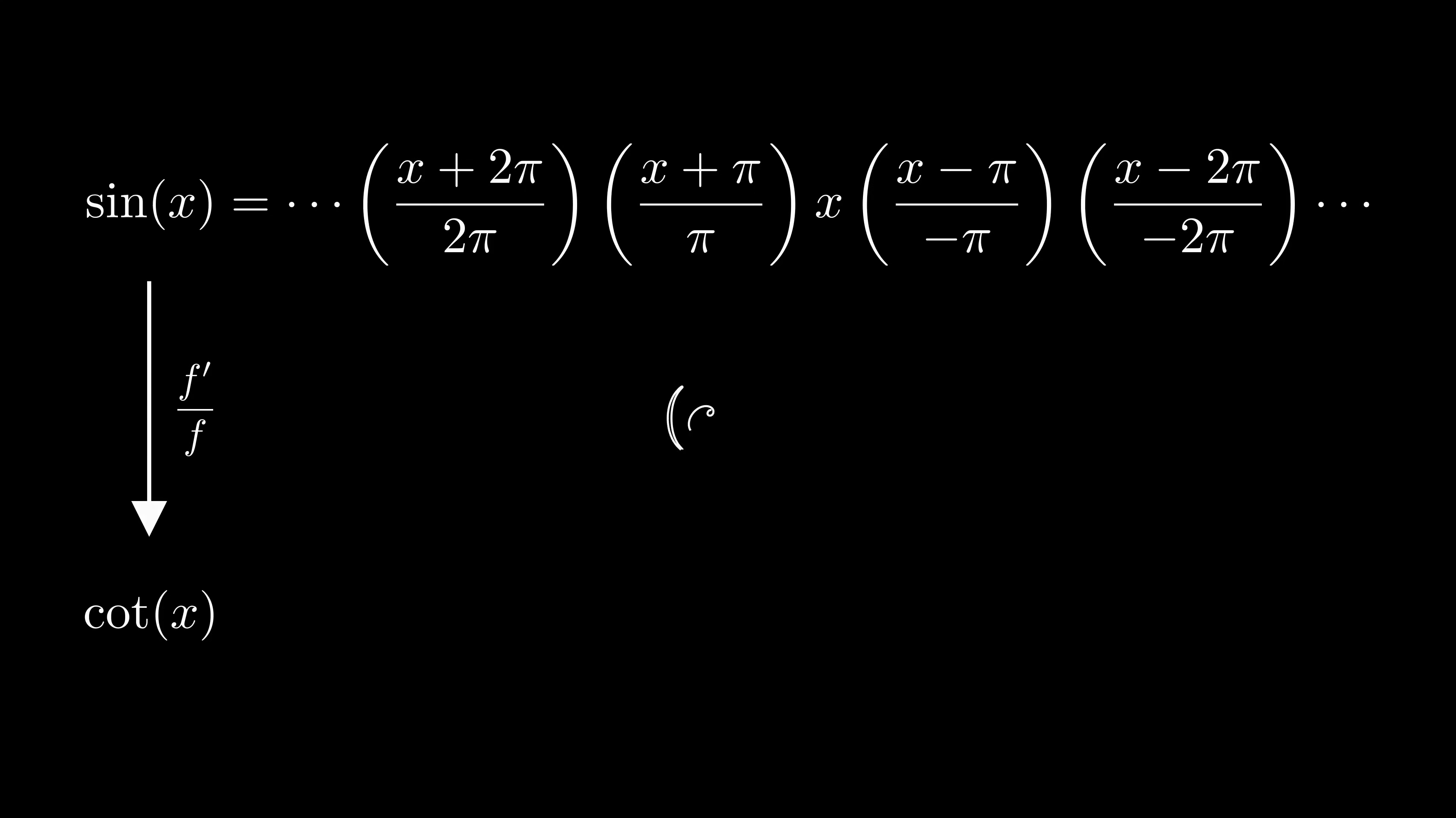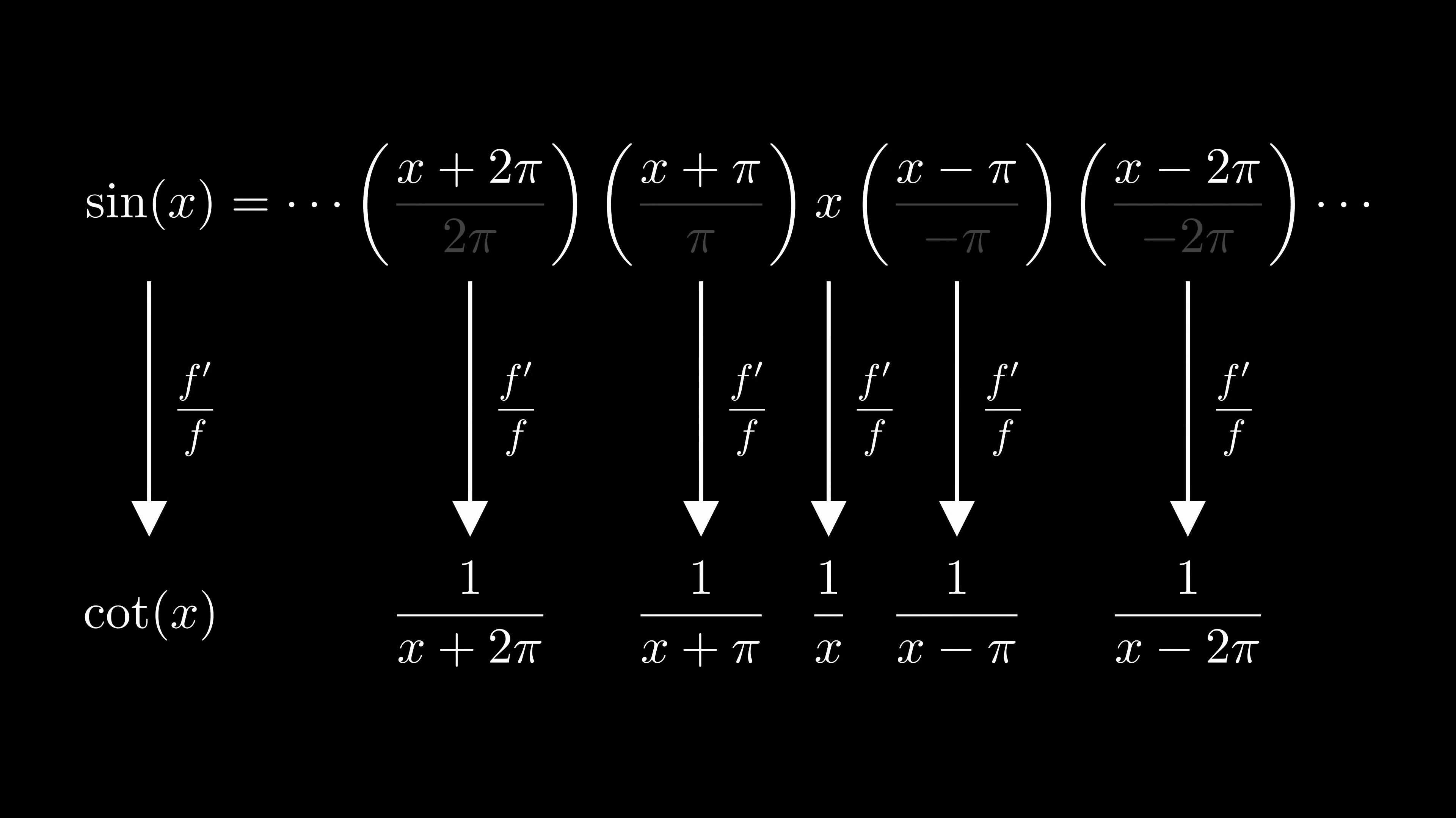Note that multiplying a function by a non-zero constant has no effect on its logarithmic derivative as the constant cancels with itself. Therefore, we can ignore all the denominators because they're just constants. Now, every term is just x plus or minus some number, so the derivatives are all just 1. This means that the logarithmic derivatives are just 1 divided by whatever we have left.